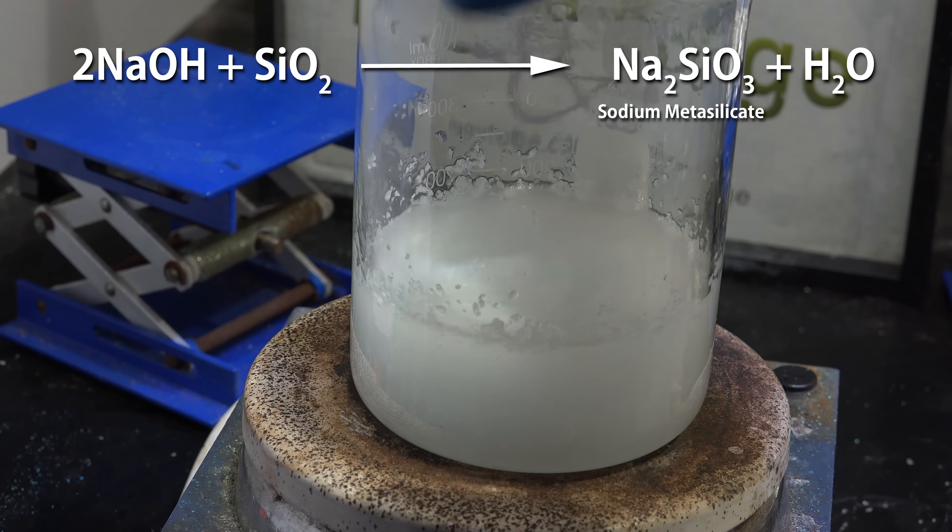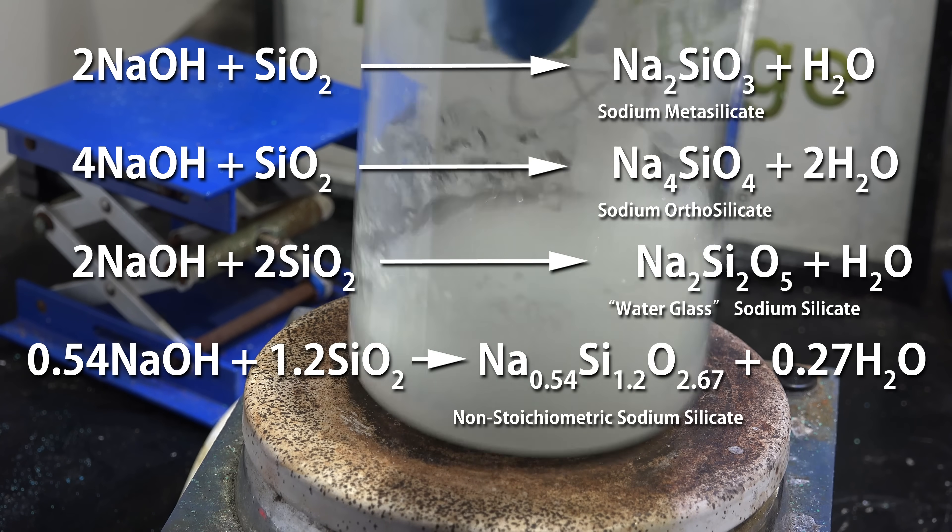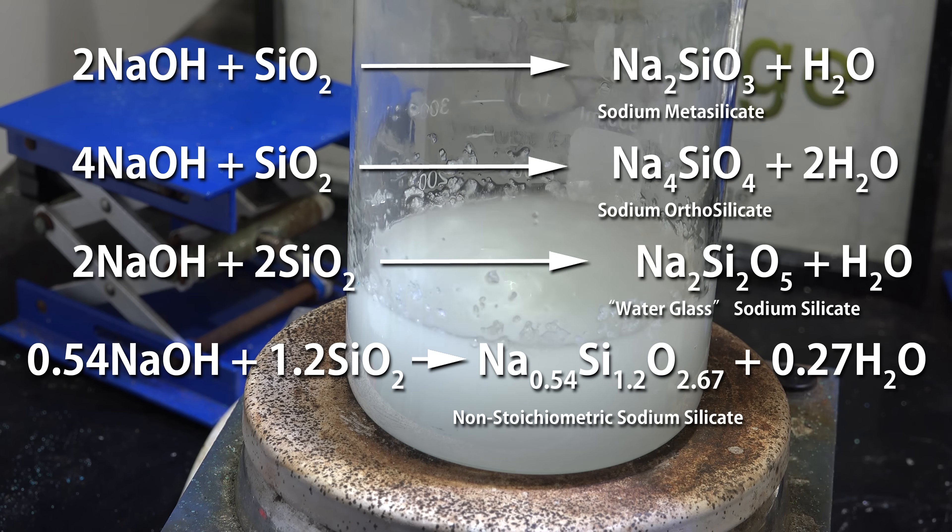But sodium silicates are not strictly defined as this ratio. Sodium silicate actually covers a broad range of ratios, and you can use four moles of sodium hydroxide to make sodium orthosilicate. Alternatively, you can have sodium-rich formulations and even non-stoichiometric ones.